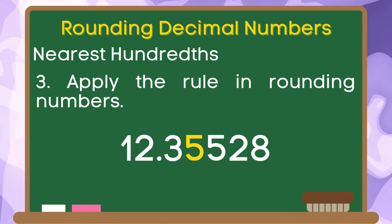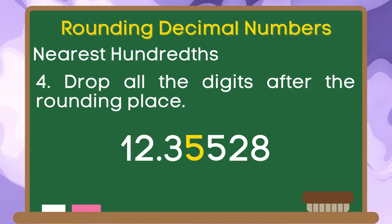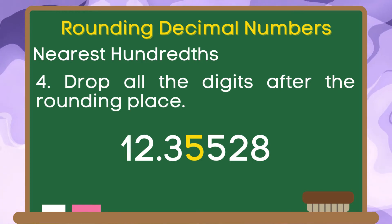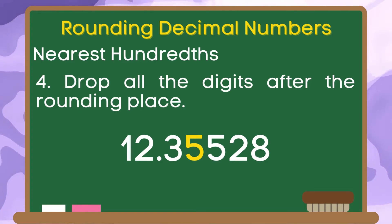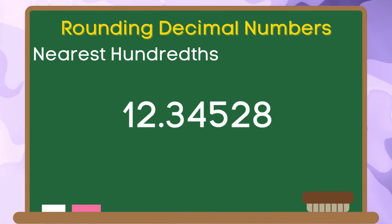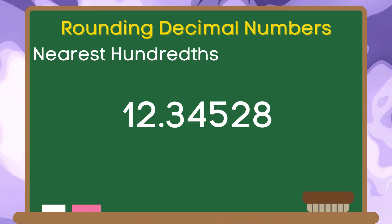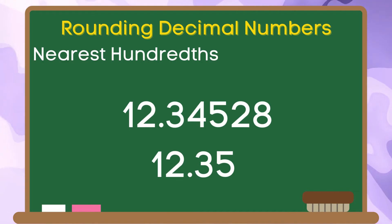And for the last step, let us drop the digits after the rounding place. The digits 5, 2, and 8 will be removed from our decimal number. Therefore, if we are going to round 12 and 34 thousand 528 hundred-thousandths to the nearest hundredths, the answer is 12 and 35 hundredths.